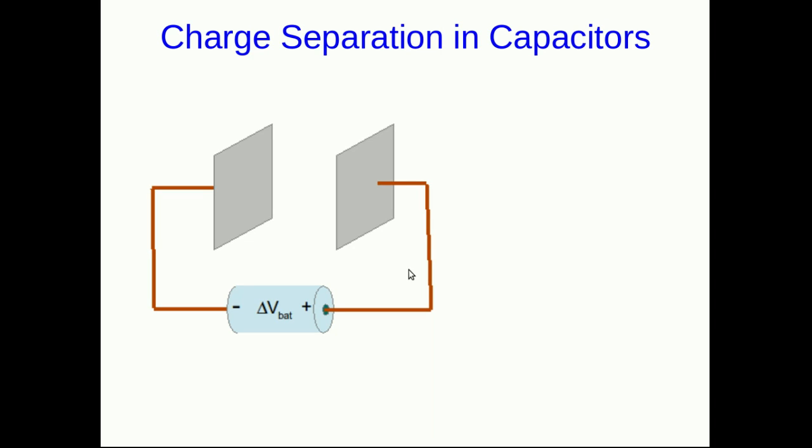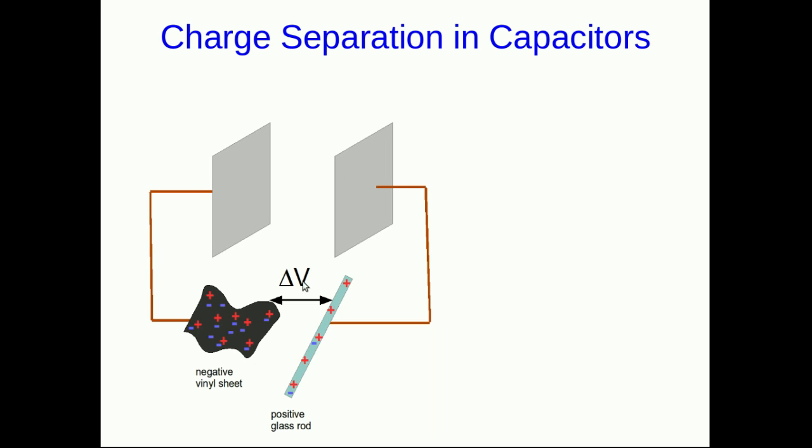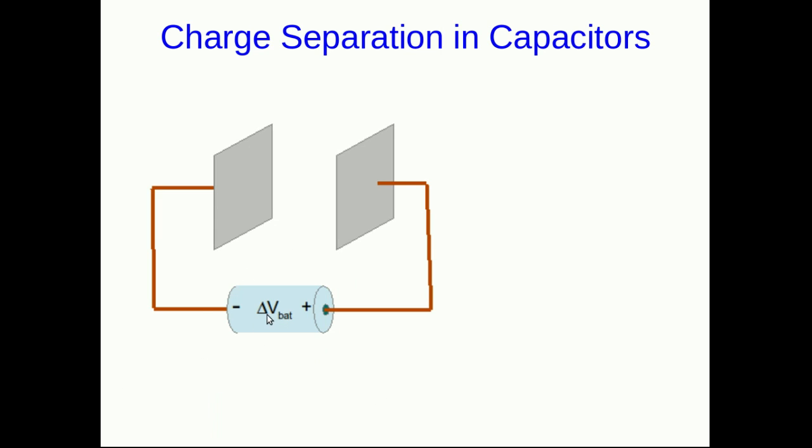Now that we know about batteries, let's think about what happens when we connect one up with a capacitor. Remember this is just a cartoon picture. The plates should be very close together not like I've drawn them. So this battery is producing a potential difference and that's going to do something to the plates. And I want to point out there's nothing special about the battery. We could connect these plates up to any source of potential difference like our glass rod and vinyl sheet and that's going to do basically the same thing. But batteries are a lot easier to think about than these. In many ways they're simpler. So let's stick with the battery.